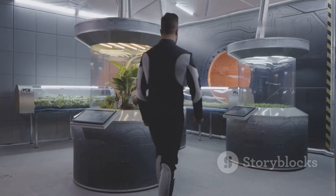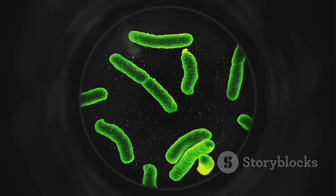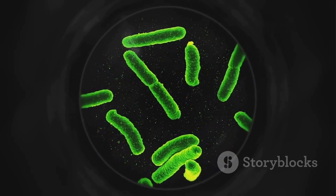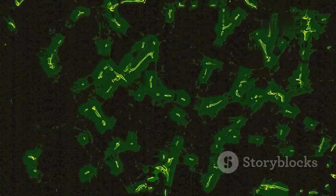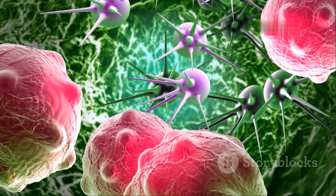And while the search for complex organisms continues, a tiny, unassuming microbe, known as Deinococcus radiodurans, offers a tantalizing clue. Nicknamed Conan the bacterium for its incredible resilience, this extremophile can withstand radiation levels that would obliterate most lifeforms.